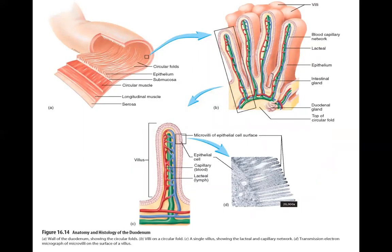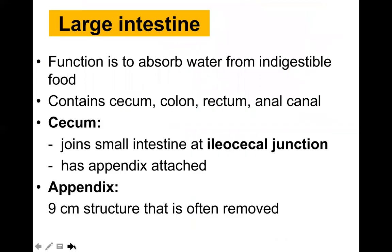The histology of the duodenum shows circular folds called plica circularis, intestinal villi — finger-like projections found in the mucosa of the small intestine — and each single villus contains a lacteal, lymph, and capillary network. This is where the majority of reabsorption takes place in the small intestine.